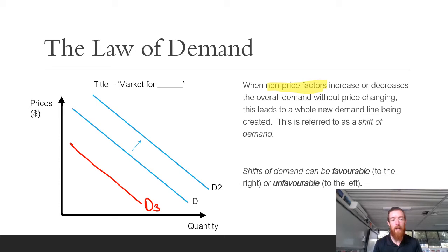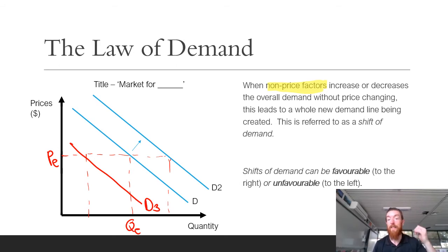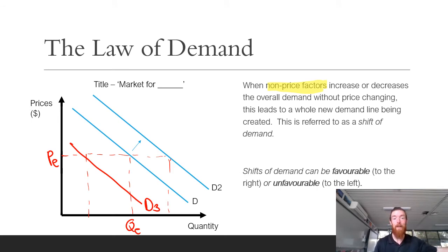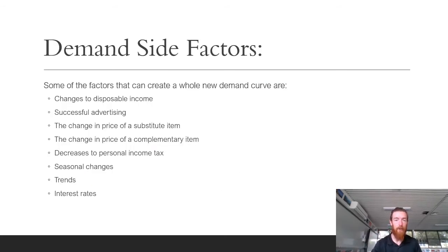When the demand curve shifts, at the same equilibrium price (P.E.) there is either more or less quantity demanded. For example, an increase in disposable income — the income left after tax — means consumers can afford more, so at the same price they want more goods, shifting the demand curve right. Conversely, if people had to pay more tax, that causes an unfavourable shift left, as they demand less at the same price.